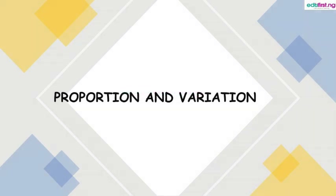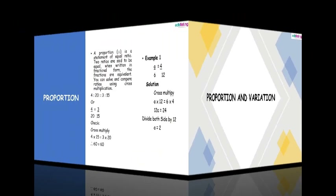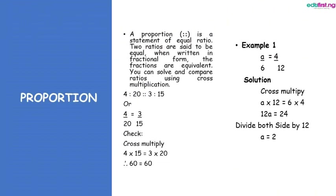In this section we will be taking proportion and variation. Let's start with proportion. A proportion is a statement of equal ratios, which means the two sets of ratios are equal to each other. The symbol for proportion is two full columns. Two ratios are said to be equal when, written in fractional form, the fractions are equivalent.